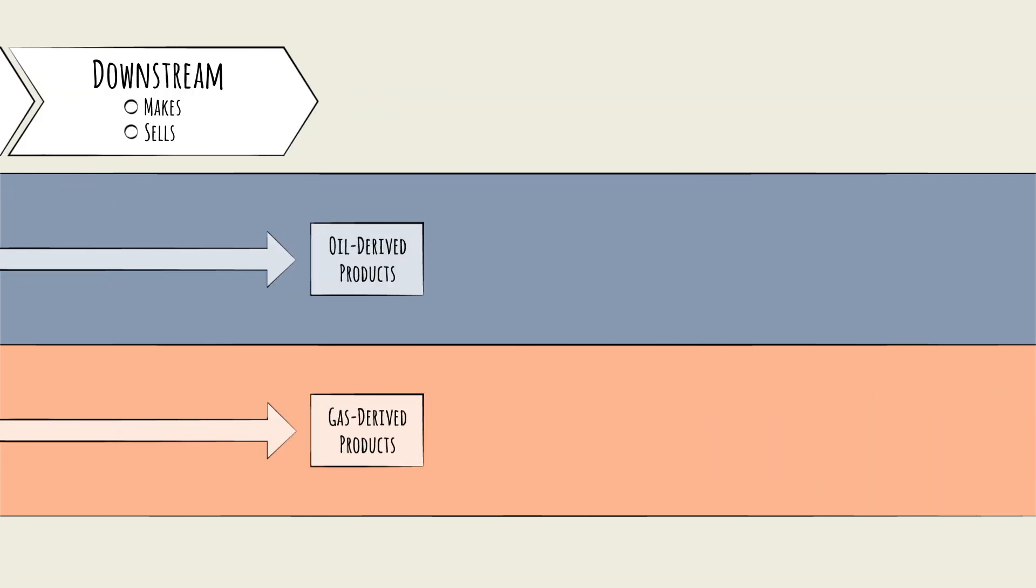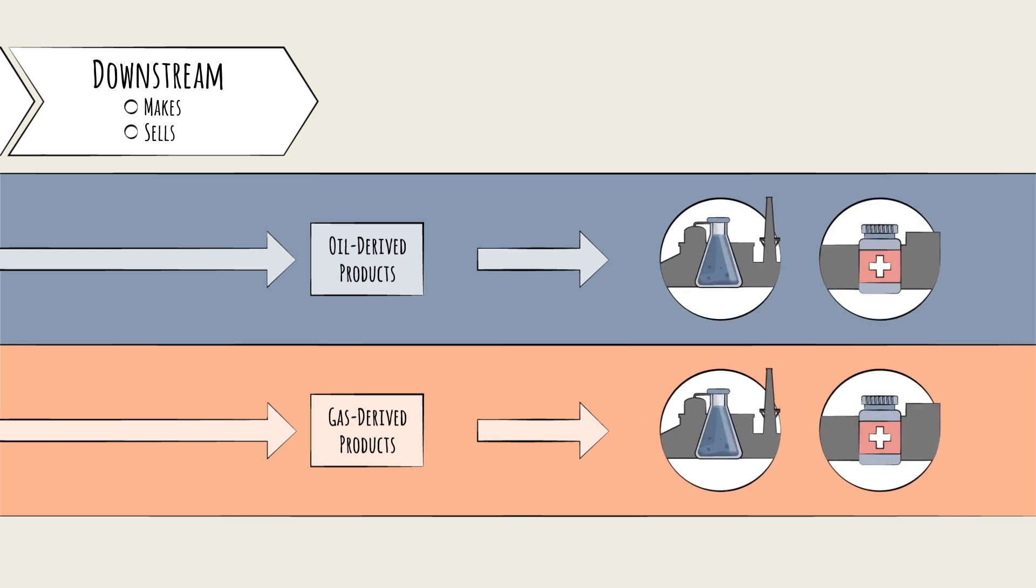Many of downstream's end products go on to separate industries, like chemicals and pharmaceuticals, before becoming finished products. These sectors are beyond this primer's scope.